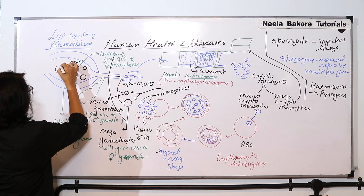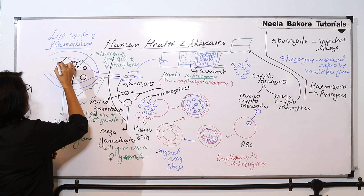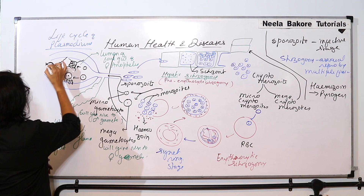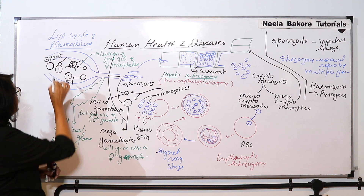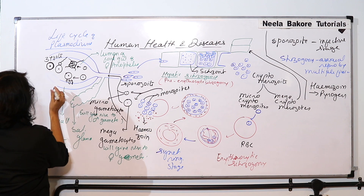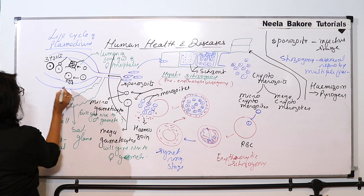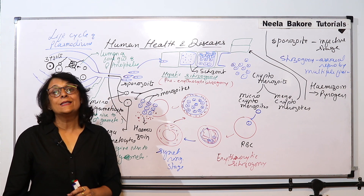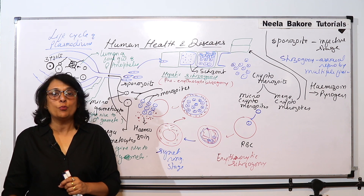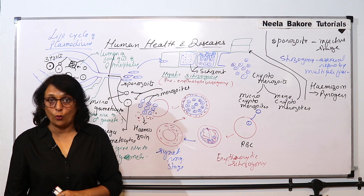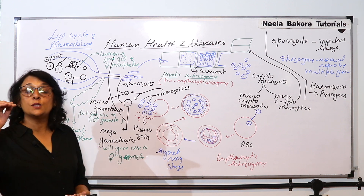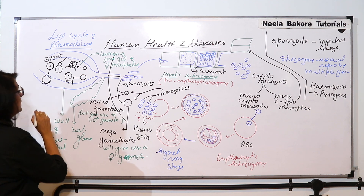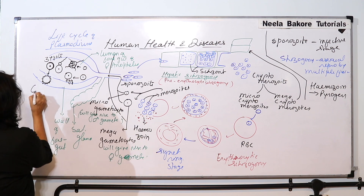Fertilization takes place — the egg is fertilized by one male gamete and this results in the formation of a zygote. In most common cases zygotes are non-motile, but this zygote moves. In humans the zygote is formed in the fallopian tube and the cilia conduct it, but here the zygote moves on its own and penetrates into the wall of the gut. The zygote secretes a cyst around itself and this motile zygote is known as the ookinete.